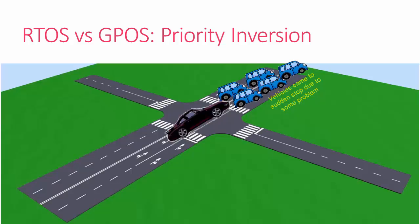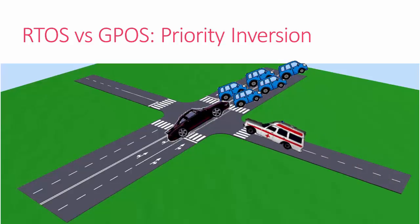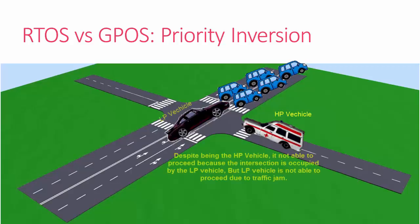Suddenly you hear the siren of an ambulance which is heading to the hospital over this lane. The ambulance is, of course, the higher priority vehicle. Now it cannot cross this intersection because unfortunately you cannot move.